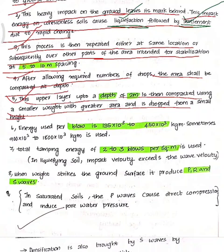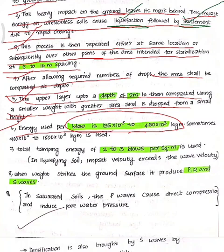The energy used per blow is 135×10³ to 450×10³ kg-meters. Sometimes it can be 900×10³ to 1800×10³ kg-meters of energy produced per blow.